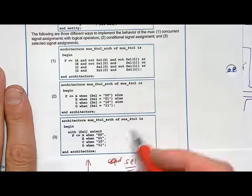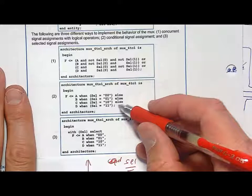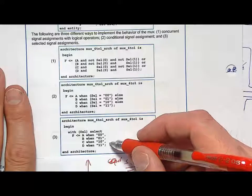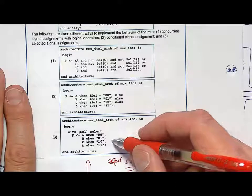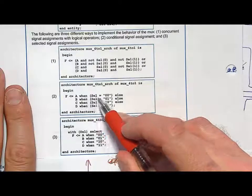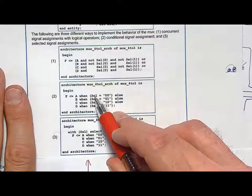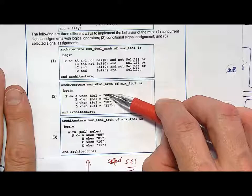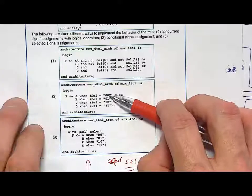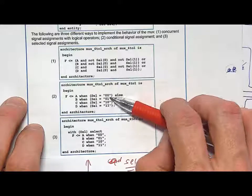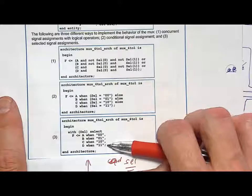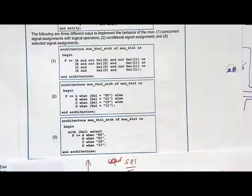Notice that we didn't have to have a final else clause in the conditional signal assignment, or a when others clause in the selected signal assignment. The reason is that we listed what input variable we're looking at, which was select, and we listed each and every possible value of it. Select could have four possible input codes, and we listed them all out explicitly, so we didn't need a final closing clause. That's how you do a multiplexer in VHDL.